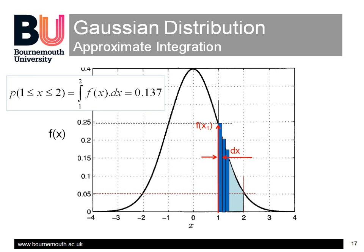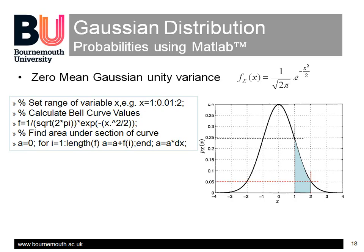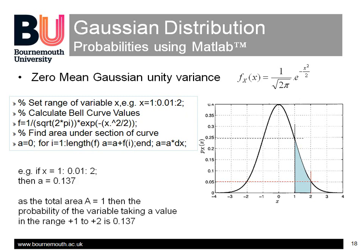The MATLAB code on this slide does this calculation and finds the result is the area a equals 0.137. That is, the variable will take a value of between plus 1 and plus 2 with a probability of p equals 0.137, or 13.7% of the time.